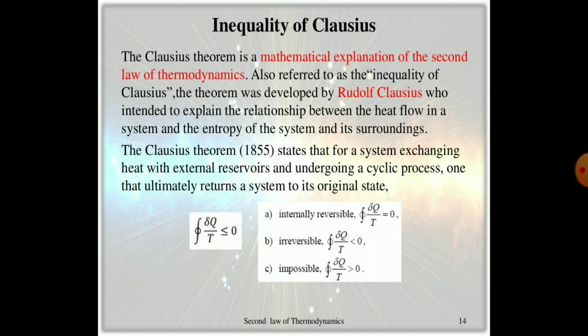The inequality of Clausius is a mathematical explanation of the Second Law of Thermodynamics. It was developed by Rudolf Clausius to explain the relationship between the heat flow in a system and the entropy of the system and its surroundings.